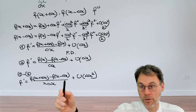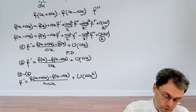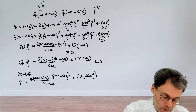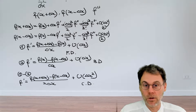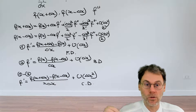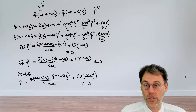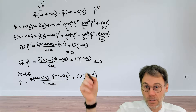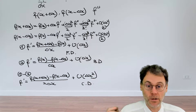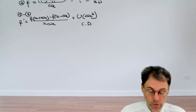So if you halve the grid size, the error divides by 4 rather than 2 — with hardly any extra numerical effort; it's just the same number of subtractions and divisions. This is called the central difference approximation. It's called 'central' because the point you're interested in is central with respect to the two other points used to calculate the approximation.